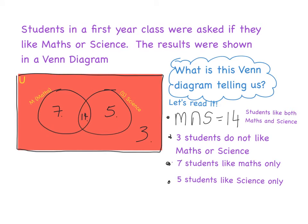From looking at my Venn diagram, I've been able to get a lot of information. I can see that 14 students like both maths and science, three students don't like anything, seven prefer maths, and five prefer science. There's also one more piece of information I can get: this universe represents students in a first year class, and all of the students are located within it. So I can actually find out how many students are in the class by adding up all of the elements.